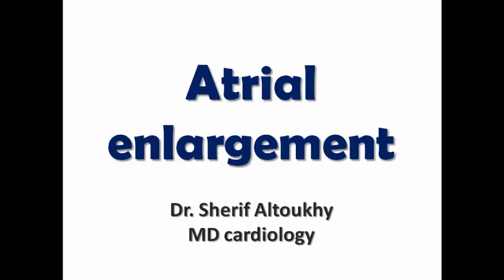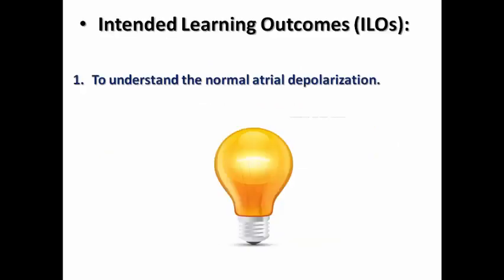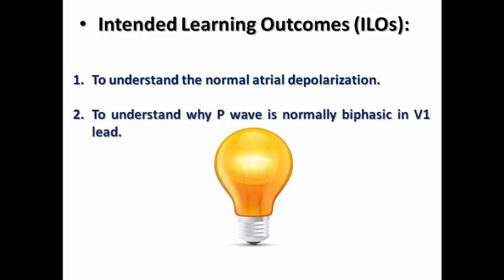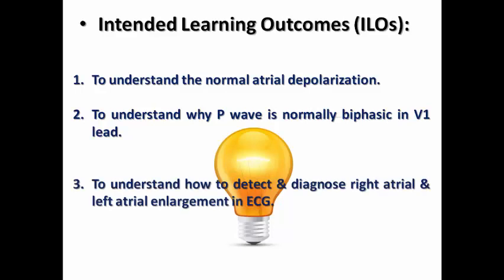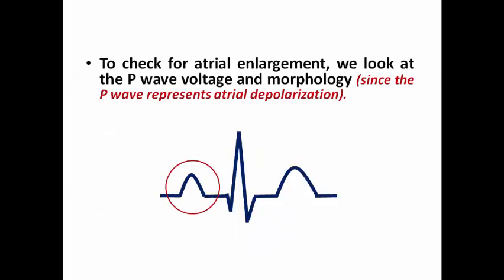Welcome to a new lecture in the ECG course. Today we are discussing atrial enlargement. We are going to understand the normal atrial depolarization, why the P wave is normally biphasic in V1, and how to detect and diagnose right atrial enlargement and left atrial enlargement on the ECG. To check for atrial enlargement we look at the P wave voltage and morphology, since the P wave represents atrial depolarization.